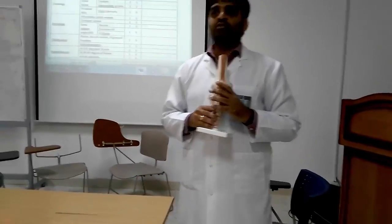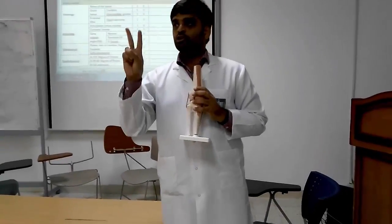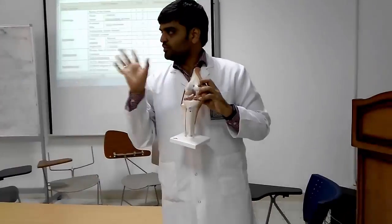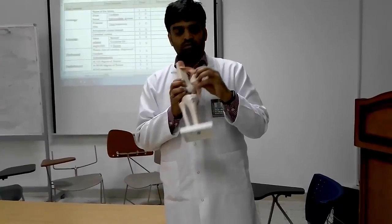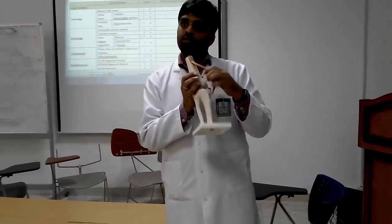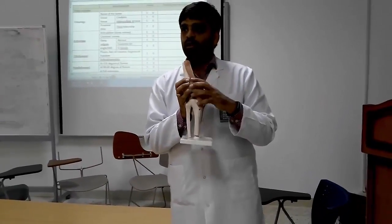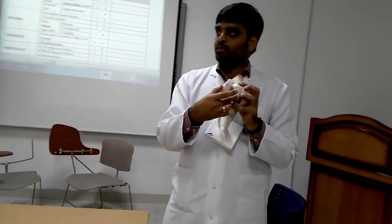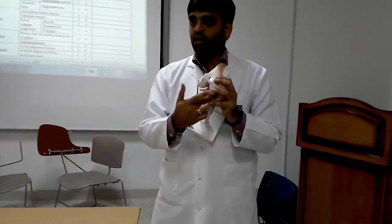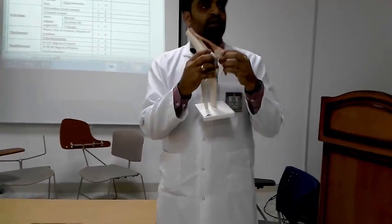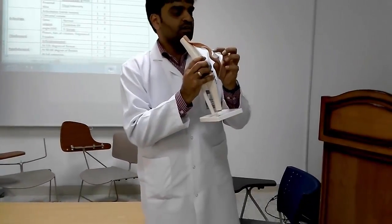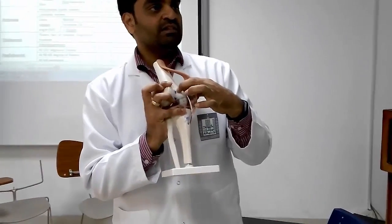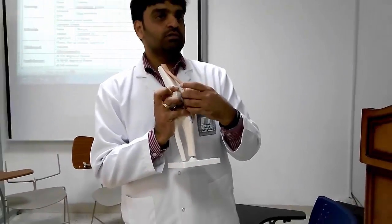Coming to the joints. How many joints are we having? Two joints: tibio-femoral joint and patello-femoral joint. In the tibio-femoral joint, condyles of the femur are convex and condyles of the tibia are concave. In the patello-femoral joint, the patella is convex and the femur is concave.